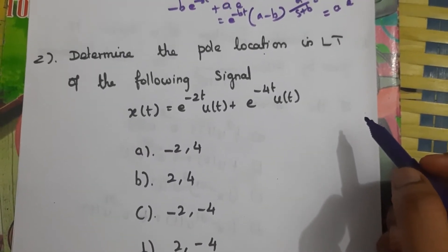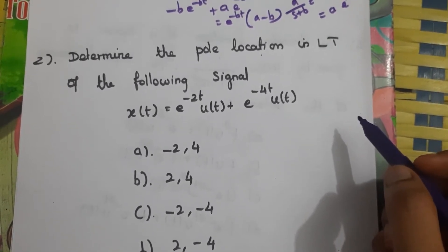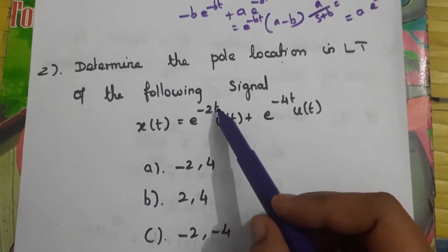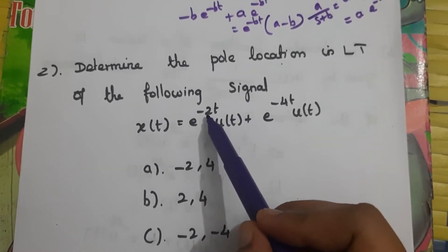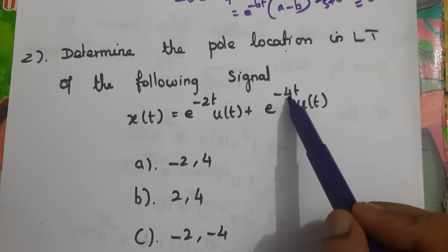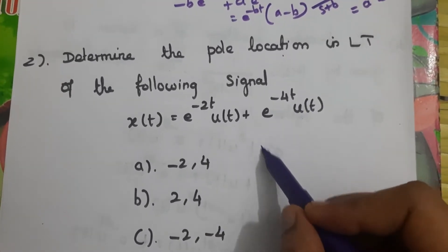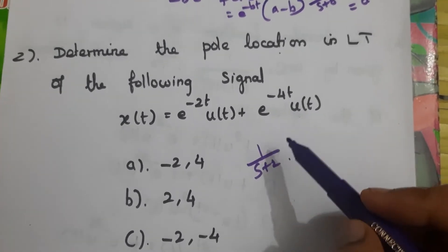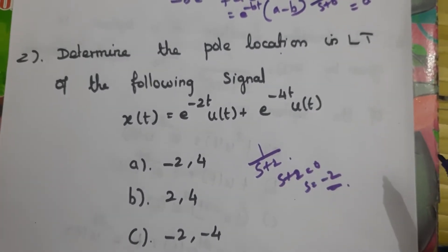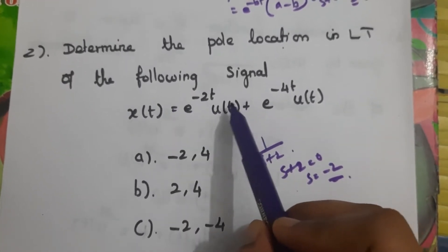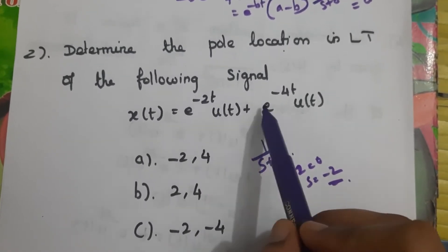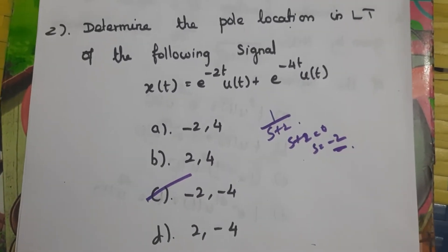Second question: determine the pole location in the Laplace transform for x(t) = e^(-2t)·u(t) + e^(-4t)·u(t). The Laplace transform of e^(-2t)·u(t) is 1/(s+2), so the pole is where s+2=0, giving s = -2. Similarly, the pole for the second term is s = -4. The answer is C.